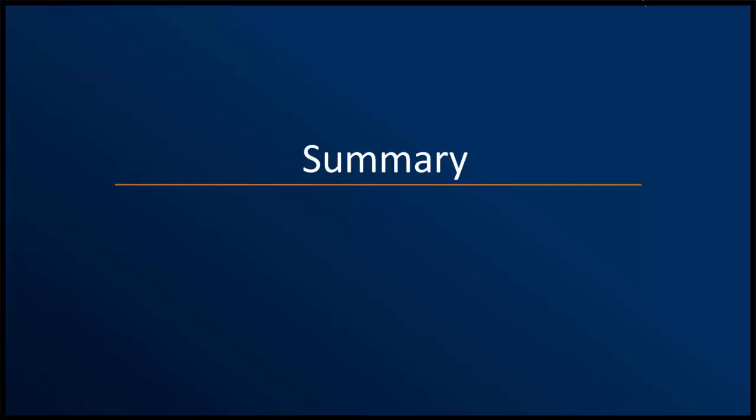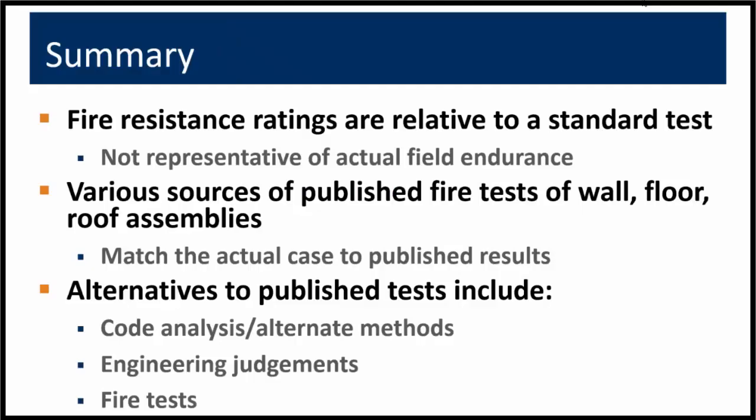In summary, fire resistance ratings are relative to a standard test. They are not necessarily representative of actual field endurance or the time on a clock in a real fire. Various sources of published fire tests of wall, floor, and roof assemblies exist and allow us to match the actual case to the published results. Alternatives to these published tests include code analysis, alternate methods, engineering judgments, and fire tests. We're also considering preparing another webinar on applying fire resistance ratings which establish the types of construction and relate them to the allowable heights and areas of the code. Please drop us a note or respond to the survey if you would be interested in such a part two on this topic.